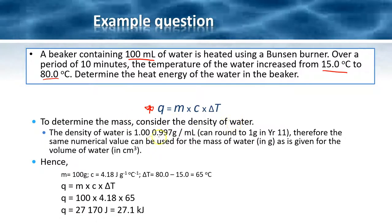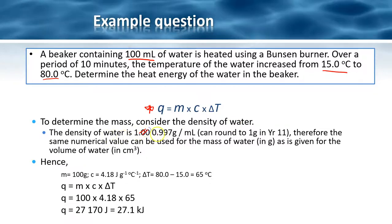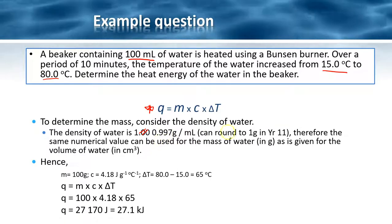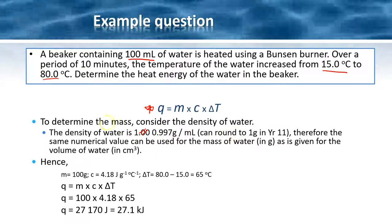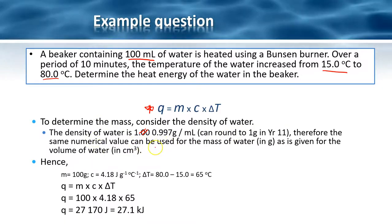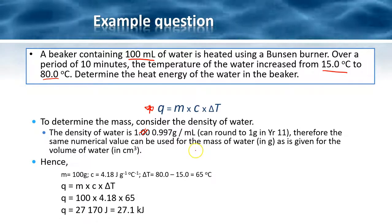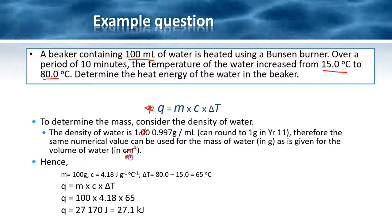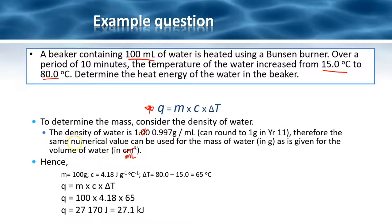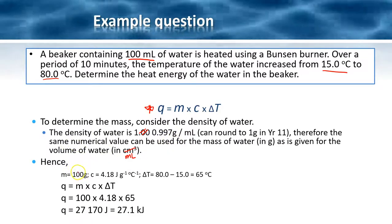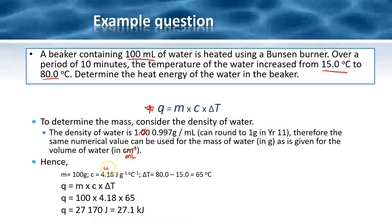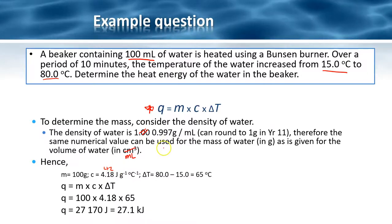We're going to use the same equation, q equals mc delta t. To determine the mass, consider the density of water, which is 0.997 grams per ml. We can round to one in year 11, so the same numerical value can be used for the mass of water in grams as given for the volume in milliliters. So mass is going to be 100 grams, our heat capacity is 4.18.